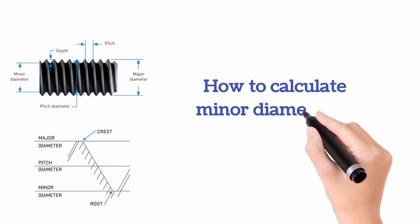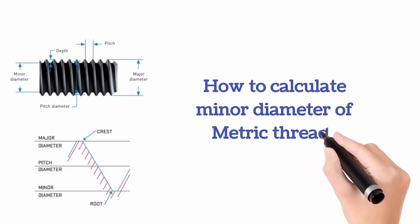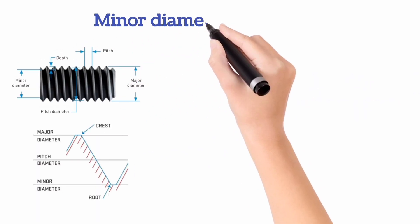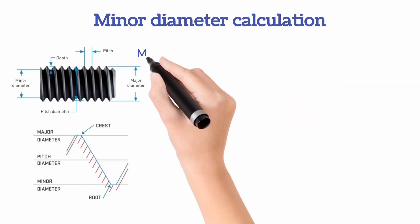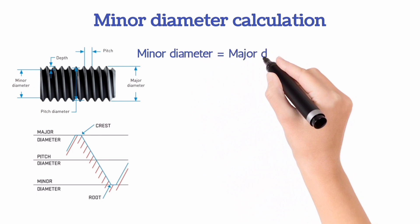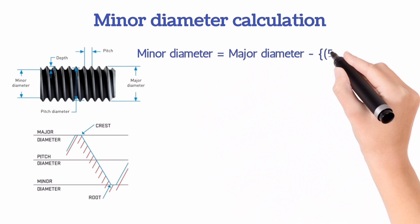How to calculate minor diameter of metric threads. There is a formula: minor diameter is equal to major diameter minus 5 times root 3 times pitch divided by 8.